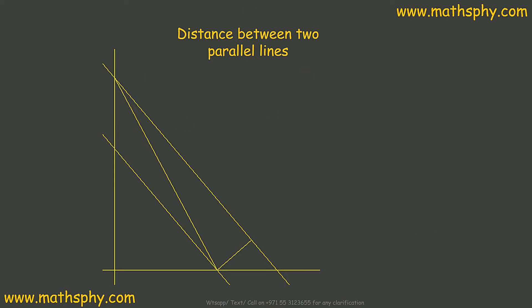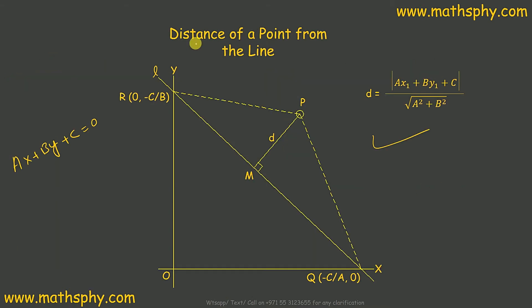This one says distance between two parallel lines. Previously what we studied was distance of a point from the line. We had this point and we found out the distance of this point from this line, which is d.